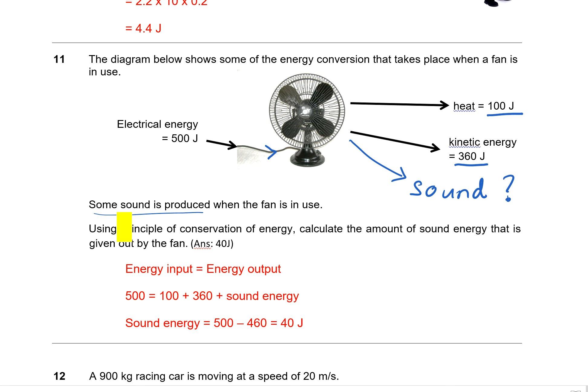Now you need to know the principle of conservation of energy. What it basically says is that energy cannot be created or destroyed, but you can convert it from one form to another. And because energy cannot be created or destroyed, when you give the fan 500 joules of energy, then 500 joules of energy should come out from this fan. But we can only see 100 plus 360, so 460 joules. Therefore, the remaining 40 joules is actually from the sound of the fan. Energy input equals energy output, same value because energy cannot be created or destroyed. And then you subtract and you will get 40 joules as the sound energy.